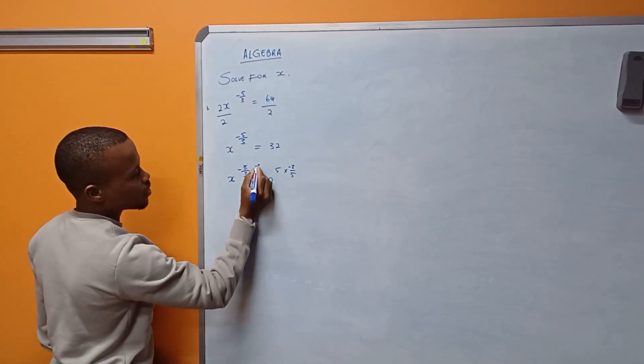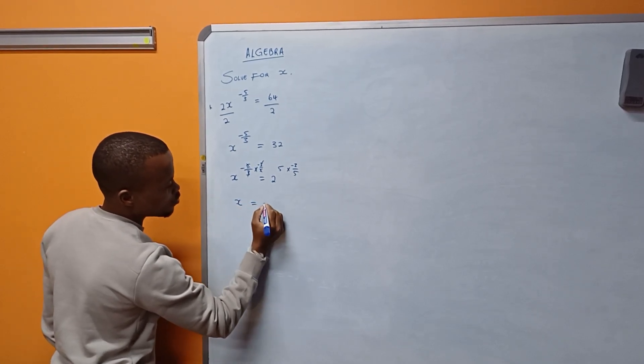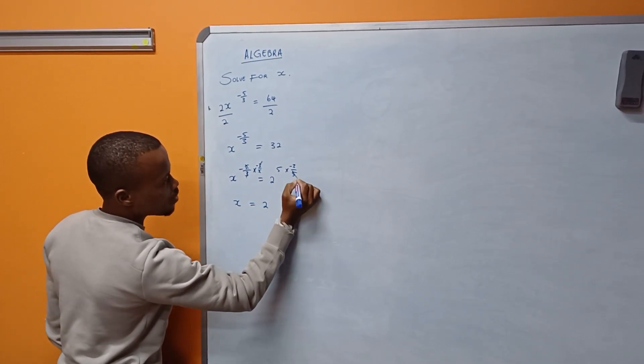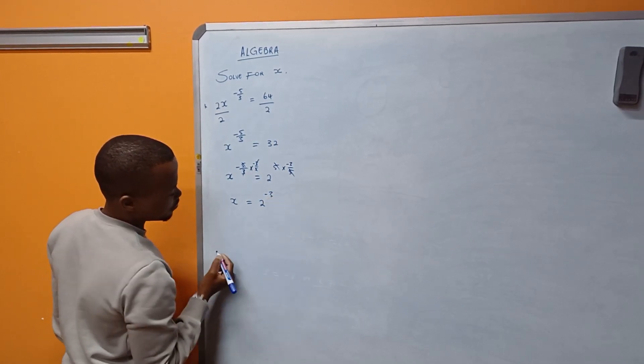The 2 cancels, these cancel. I'm left with x being equal to 2, and 5 and 5 cancels to the power of minus 3.